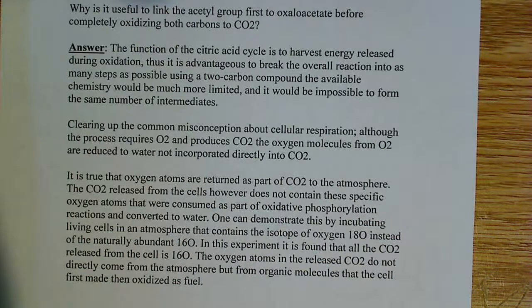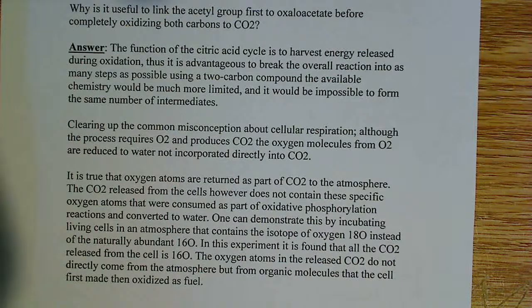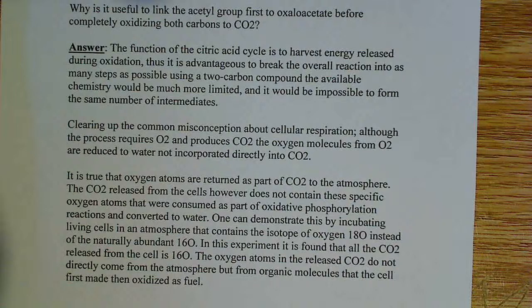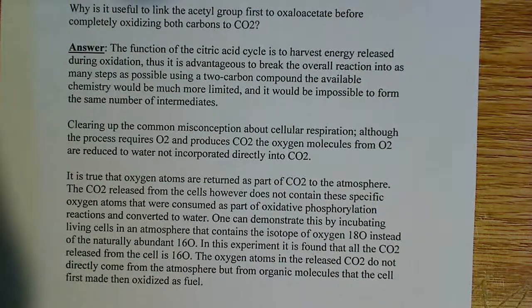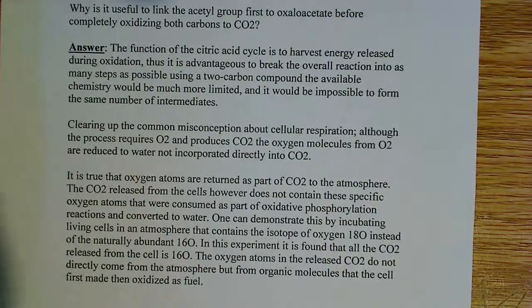The function of the citric acid cycle is to harvest energy released during oxidation. The whole point is to make those reduced electron carriers and high-energy molecules like GTP. It's advantageous to break the overall reaction into many steps — as many steps as you possibly can.